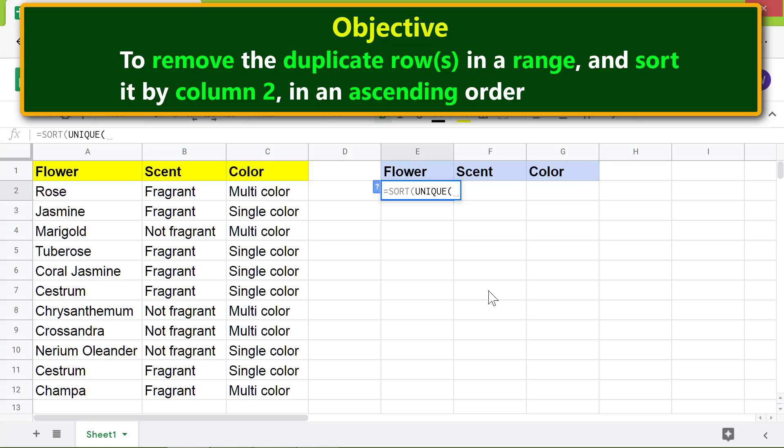Type the closing parenthesis. Type comma. For sort column, type 2 because this is the column number by which we want to sort. Type comma. For is ascending, type 1 because we want to sort this column in ascending order.